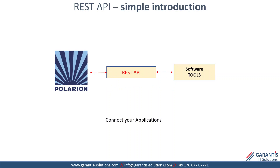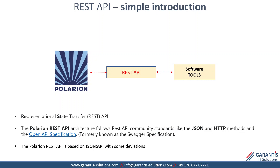Simple introduction: if you have REST API, you can connect your applications. You can use other technologies, but REST API is a modern, lightweight way to connect applications. You can have software tools on the right side and they can write and read data using REST API. REST stands for Representational State Transfer. The Polarin REST API architecture follows community standards like JSON, HTTP methods, and the Open API specification, formerly known as Swagger specification. The Polarin REST API is based on JSON API with some deviations.